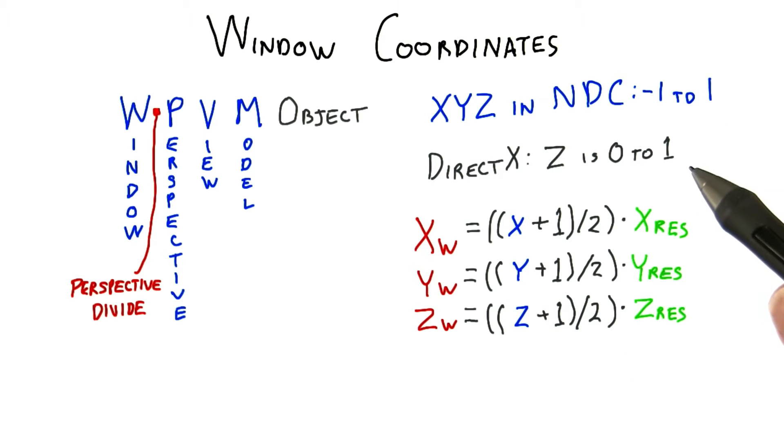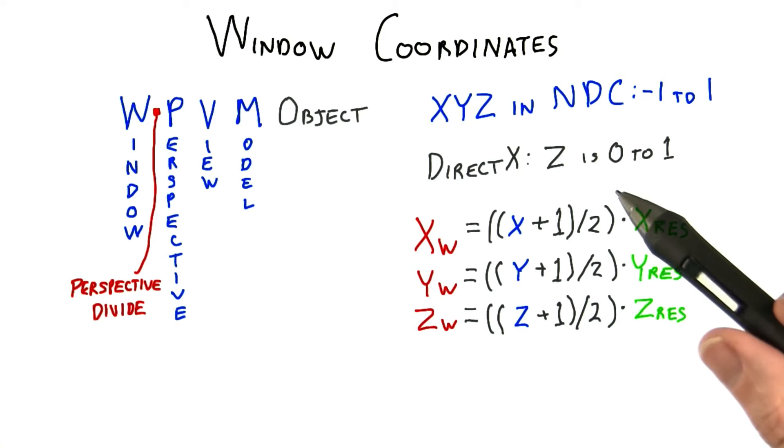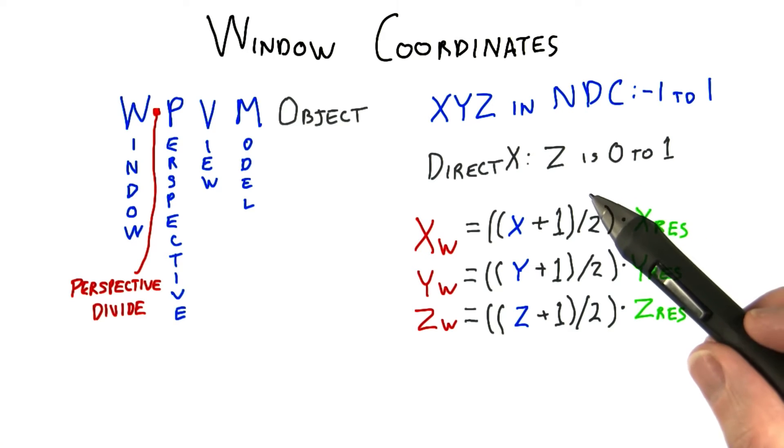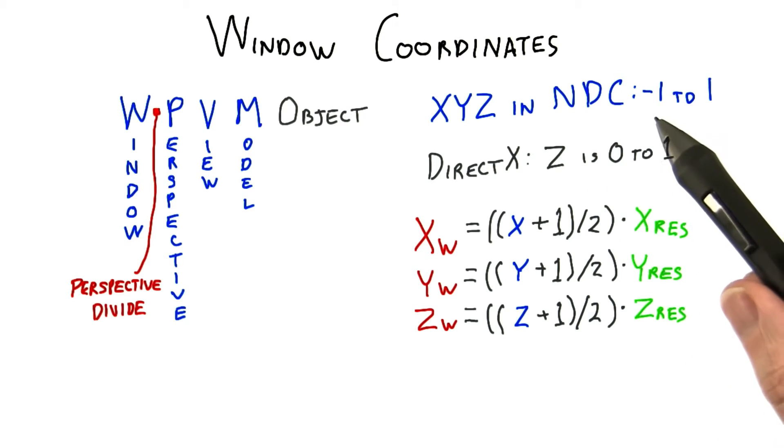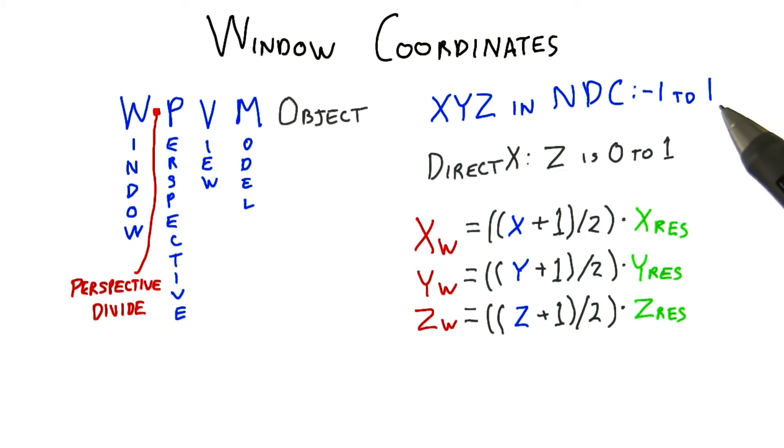I should mention at this point that the other popular API, DirectX, has normalized device coordinates for the z value that range from 0 to 1 instead of negative 1 to 1. It doesn't really matter what range is used. It's just important to know that this range can vary. The x and y ranges of going from negative 1 to 1 is standard throughout any system I've ever seen.